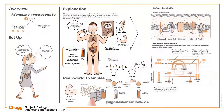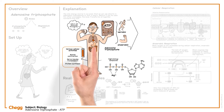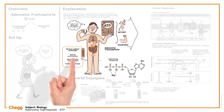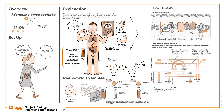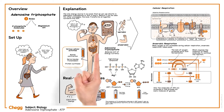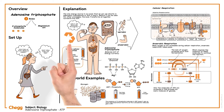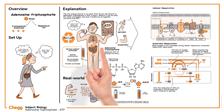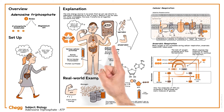ATP gives energy to a variety of biological functions in living cells, including muscular contraction, nerve impulse transmission, condensate dissolving, and chemical synthesis. It is frequently called the molecular unit of currency of intracellular energy transfer and is present in all known forms of life. Every day, the human body recycles as much ATP as its body weight. Additionally, ATP serves as a coenzyme and a precursor to DNA and RNA.